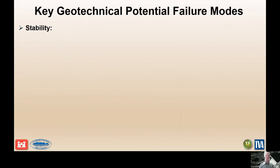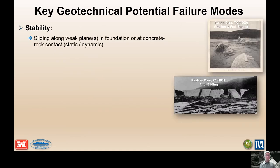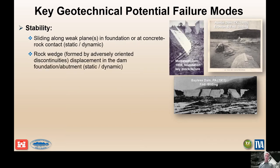Some key geotechnical PFMs. The first category is instability, where we can have sliding along weak planes in the foundation or at the concrete-rock contact. These can be seismic or dynamic. We can also have adversely oriented discontinuities which form a rock wedge that's what's called removable.